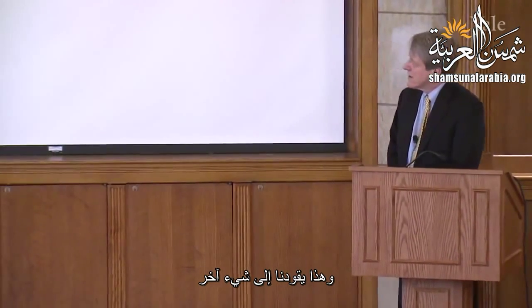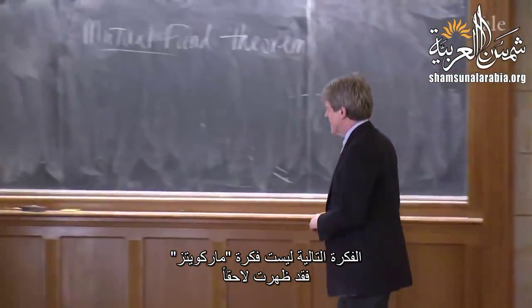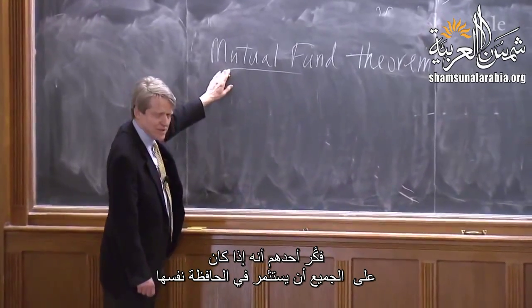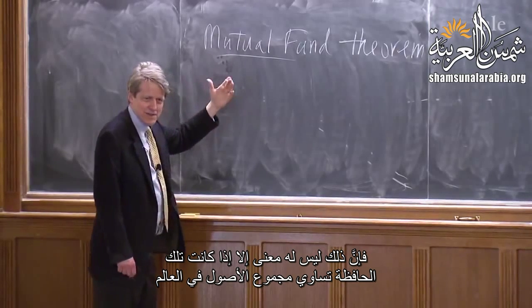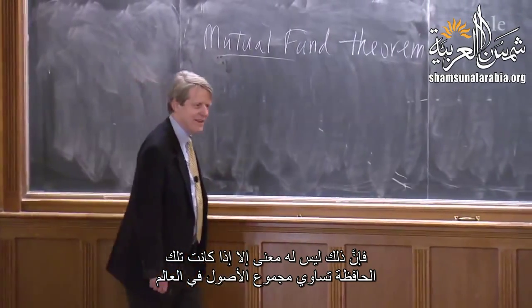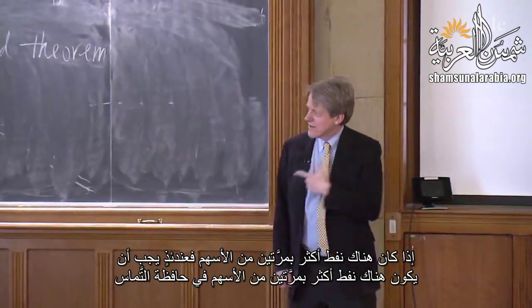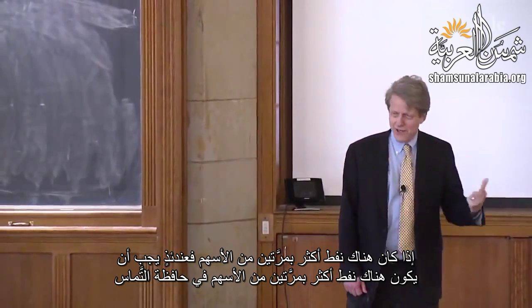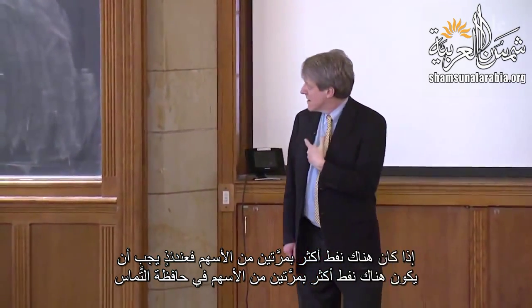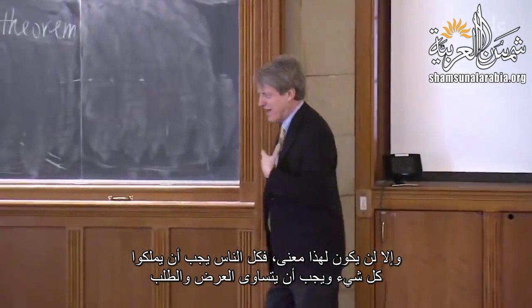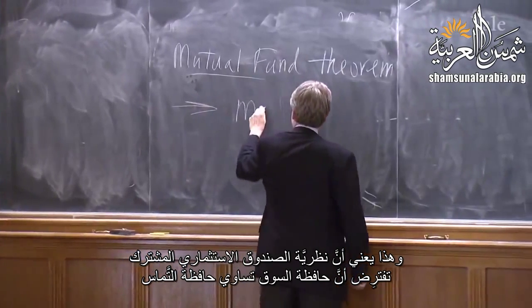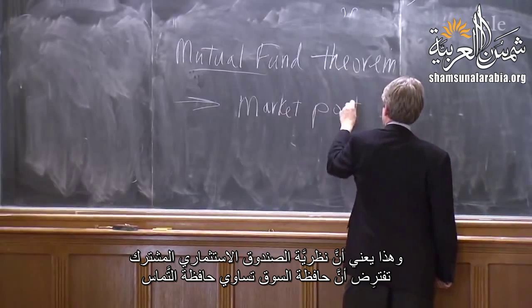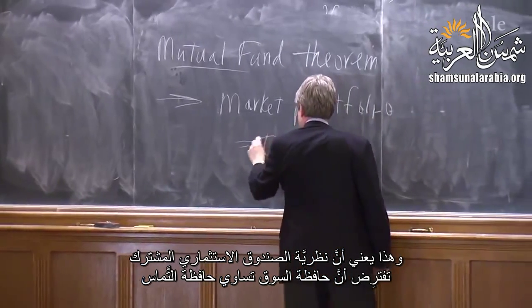The instructions to investors are very simple: all you need is two assets — the mutual fund that owns the tangency portfolio, and whatever amount of riskless debt you want. If you're footloose and fancy free, you can even leverage it — borrow two-to-one, three-to-one. Now, if everyone should be investing in the same portfolio, it doesn't add up unless that portfolio is proportional to the total assets out there in the world. If there's twice as much oil as stock, there has to be twice as much oil as stock in the tangency portfolio.